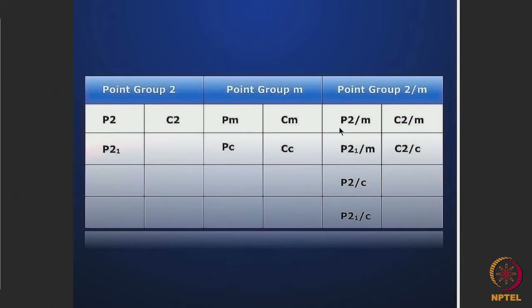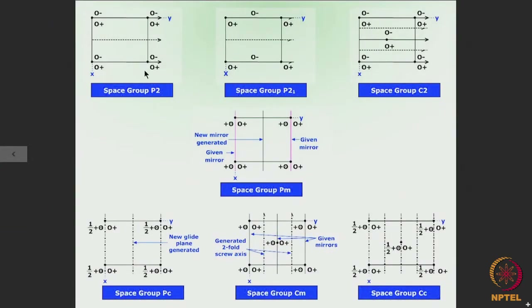Let us take the first one, the space group P2. P2 immediately shows that the underlying lattice is a primitive lattice. We are having a plan view here taken from the top of the lattice, with 4 lattice points. P2 means a space group where the Bravais lattice is a primitive one and it has a twofold rotor as the only symmetry element.